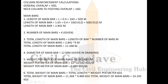Column reinforcement calculation: general overlap = 50d; neck column to footing overlap = 16d. Length of main bar = L + 0.4 + 16d + 50d. That is: 1.65 (column height) + 0.4 (footing height) + 16 × 0.012 (bend/lap in footing) + 50 × 0.012 (lap at bottom) = 2.842 meters. Number of main bars = 4.